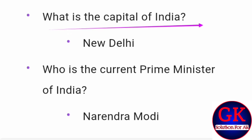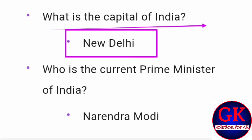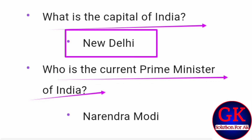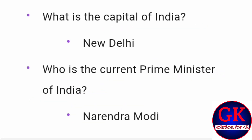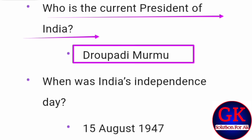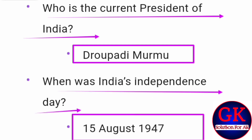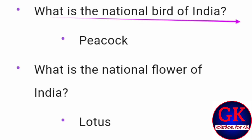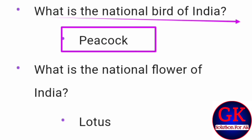What is the capital of India? Right answer: New Delhi. Who is the current Prime Minister of India? Right answer: Narendra Modi. Who is the current President of India? Right answer: Draupadi Murmu. When was India's Independence Day? Right answer: 15 August 1947. What is the national bird of India? Right answer: Peacock.